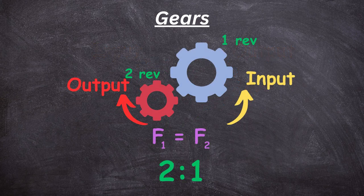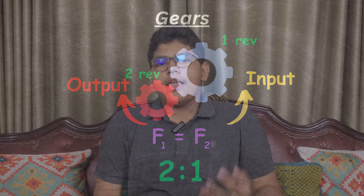On the other hand, if the output gear is twice the size of the input, you have to rotate the input gear two times in order to get the output to move once. That means you are using half the force per revolution but you need two revolutions. Transferring power is easier per step, but you have more steps to complete in order to transmit enough power.